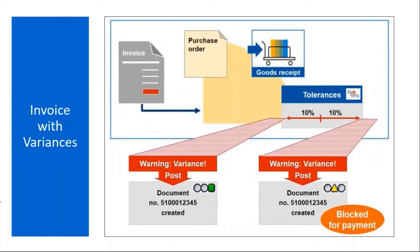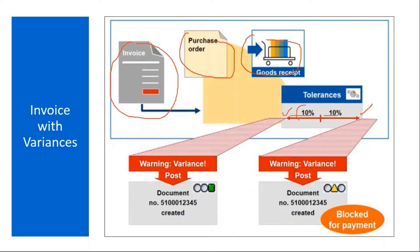So this is the scenario. You have a purchase order, you received the material, and then the vendor sends the invoice. Let's say you have some tolerances defined in the system — say 10%, for higher or lower quantity or price. Within this tolerance, the system will not block the invoice. But outside of this tolerance, the system will block the invoice. It will post the invoice, but it will be blocked for payment — you will get a message saying 'blocked for payment.'